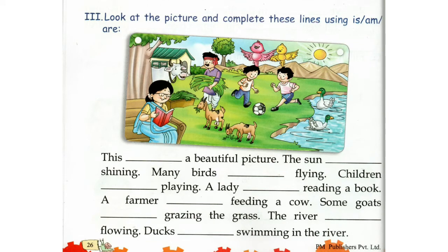Now children, all of you turn to page number 26 in English grammar. Let's try to do question number 3. Look at the picture and complete these lines using Is, Am or Are. Always remember, we use Am with I. We use Is when there is only one object, that is, a singular noun. And we use Are for plural nouns, which are more than one.